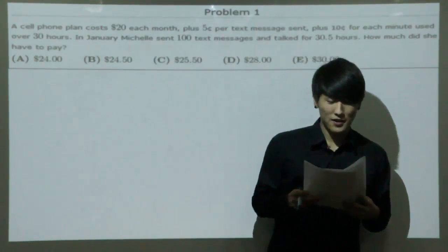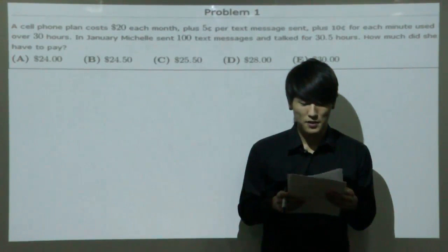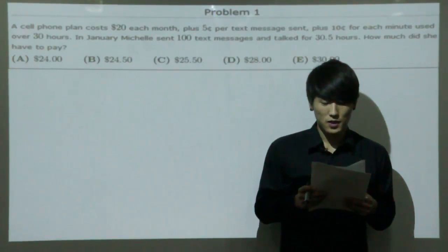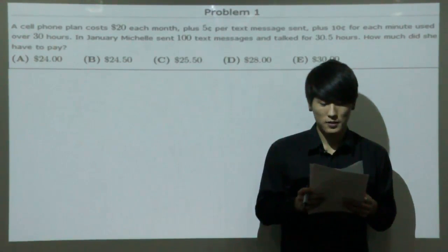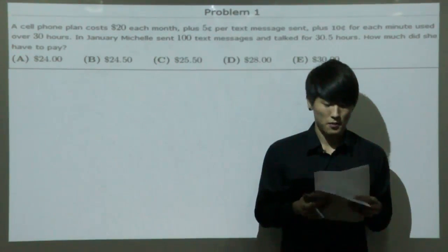A cell phone plan costs $20 each month plus 5 cents per text message sent plus 10 cents for each minute used over 30 hours. In January, Michelle sent 100 text messages and talked for 30.5 hours. How much does she have to pay?